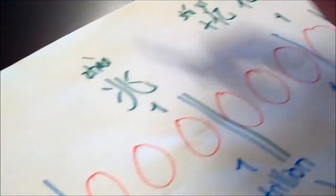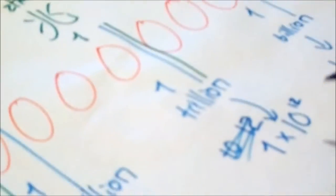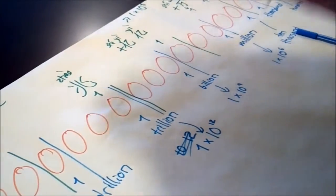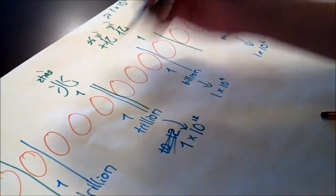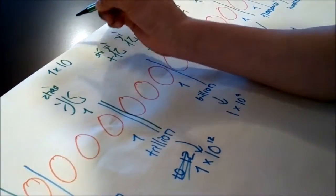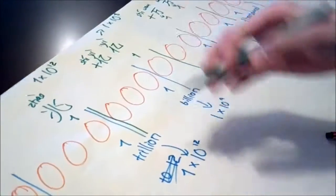But when it gets to zhao, it is the same as trillions. So these equal, these match. So trillion and zhao match in the number of zeros that come after the one. So this is one times ten to the power of twelve.